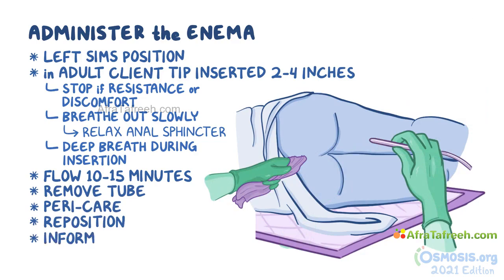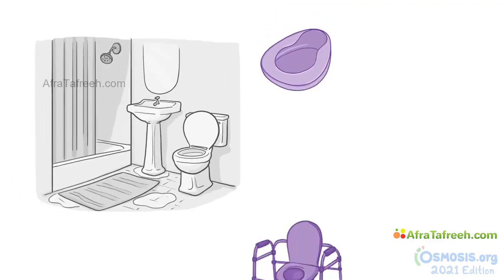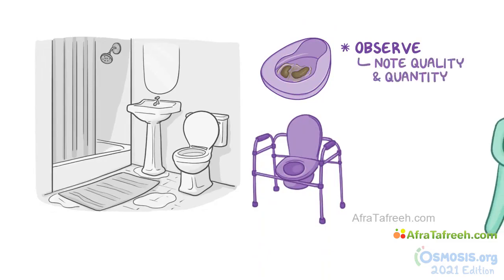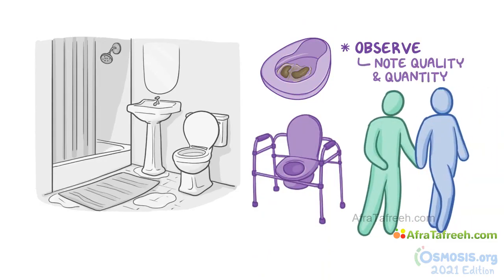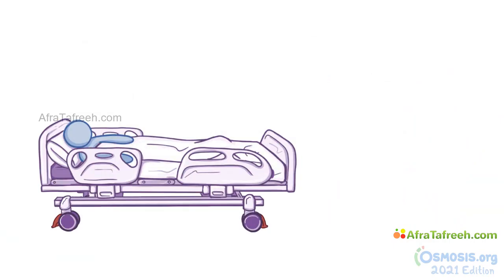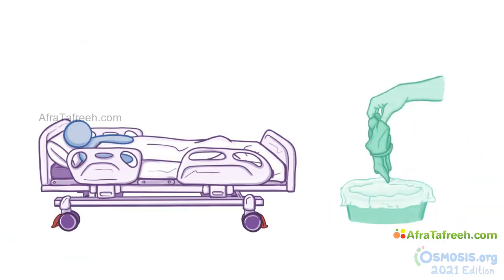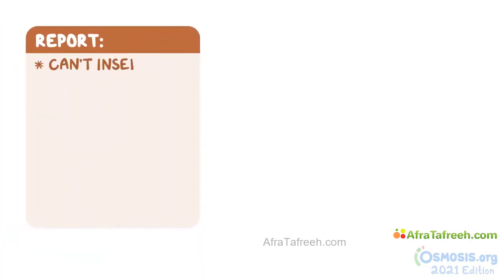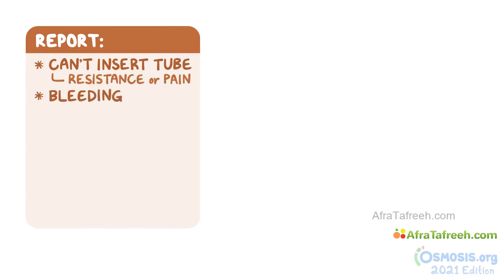Inform the client about how long they should retain the enema and stay by their side. Once the time is up, assist them to the bathroom or use a bedpan or the bedside commode. Observe the content of the stool and note the quality and quantity. Help the client back to bed if needed. Raise the side rails and lower the bed. Finish up by disposing of waste and returning the supplies for proper storage. During the procedure, report to the nurse immediately if you can't insert the tube due to resistance or pain, or if you notice bleeding.